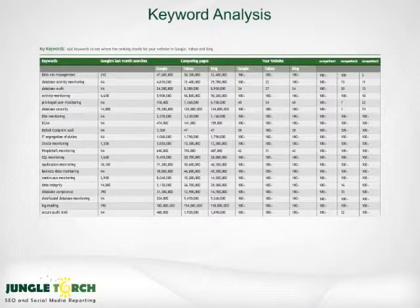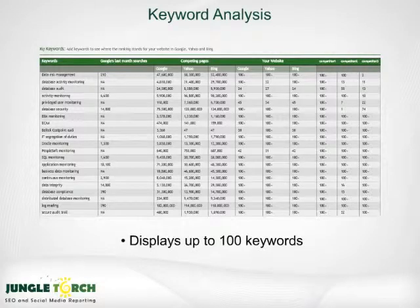By going to the Keyword Analysis page, Jungle Torch shows you how your organic keywords and phrases rank on Google, Yahoo, and Bing. You can also see how you stack up against the competition for these very same words. Jungle Torch Keyword Analysis sections show you up to 100 keywords in Google, Yahoo, and Bing.